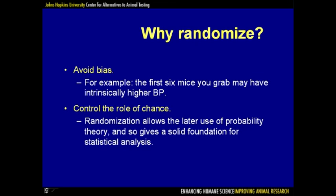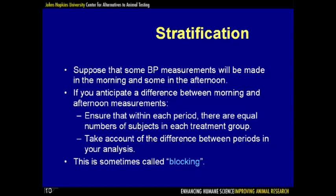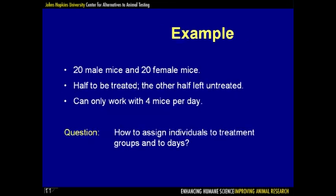A second, more subtle reason to randomize is that, through explicit randomization, we control the role of chance in the experiment, which puts the later statistical analysis on a more solid foundation. The fifth principle is stratification. Suppose that some blood pressure measurements would be made in the morning and some in the afternoon. If we anticipate a difference between morning and afternoon measurements, we would want to ensure that within each time period, there were equal numbers of individuals from each treatment group.